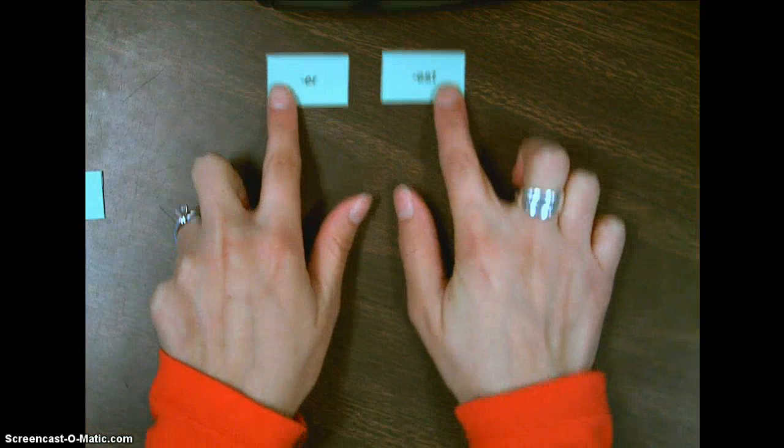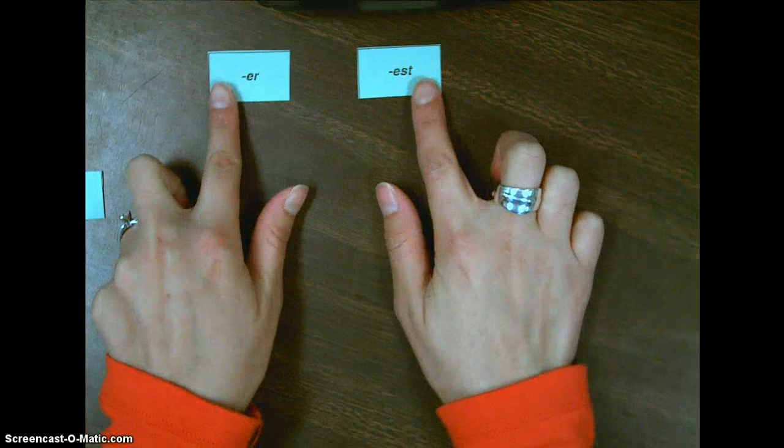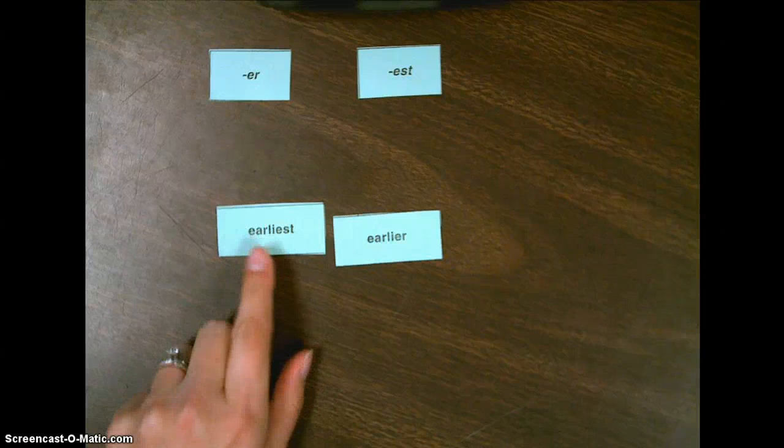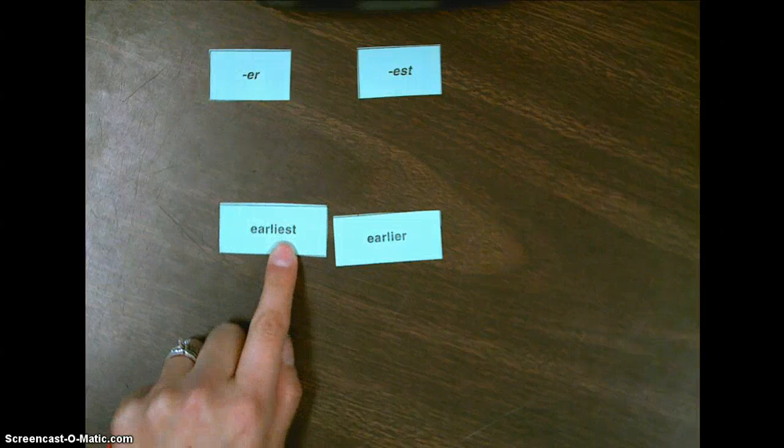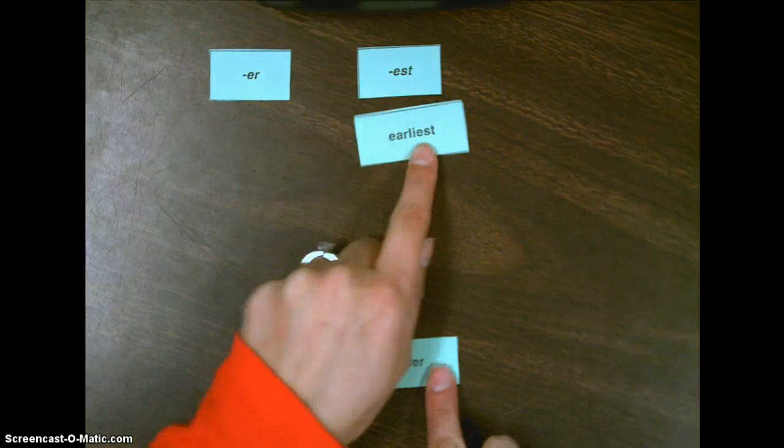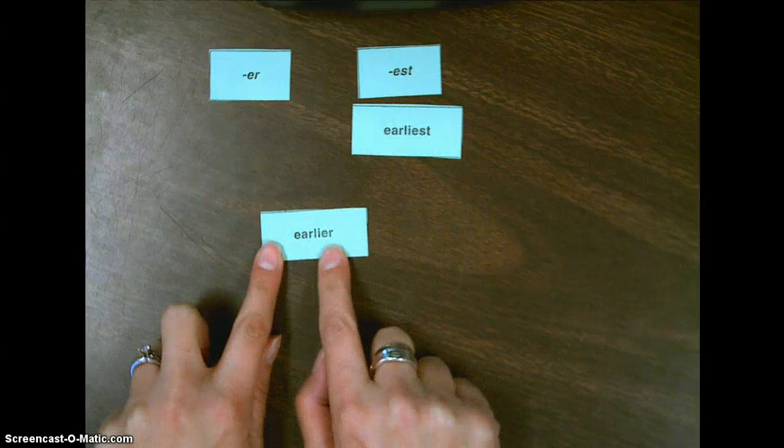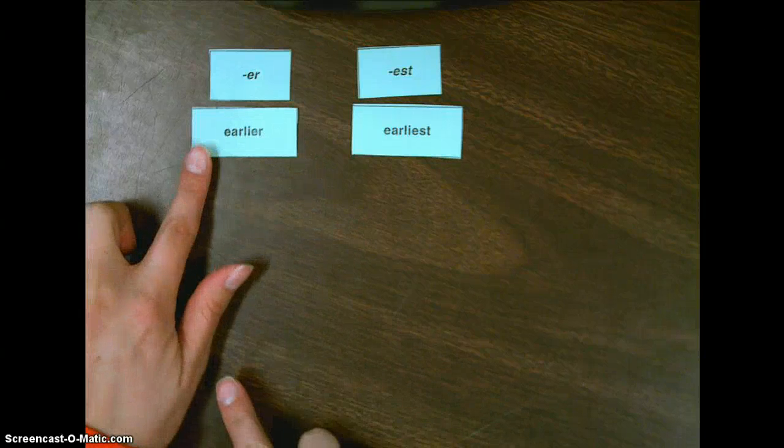Now, let's take a look at our sorts. We're going to start with the headers er and est. I'd like you to put both of those up. Now, let's take a look through our words and figure out which categories they go in. These two words here go together, earlier and earliest. Earliest, I see the suffix est, so I'm going to put that in this category right here. The word earlier has a suffix er, and so that's going to go in this column right here.